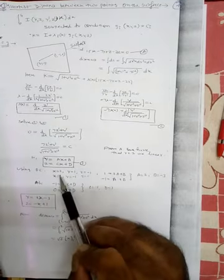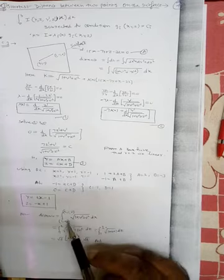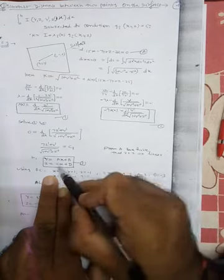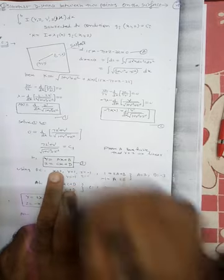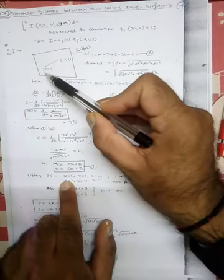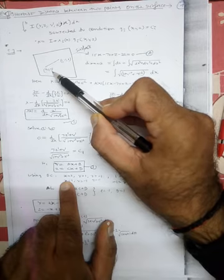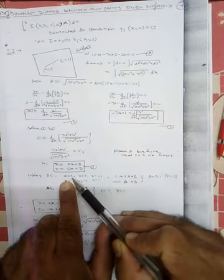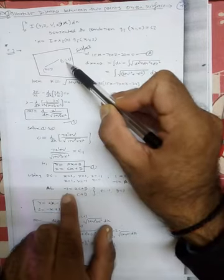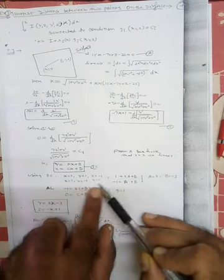From x = 2, y = 1: 1 = 2A + B. From x = 1, y = −1: −1 = A + B. Solving: A = 2, B = −3. For z: from x = 2, z = −1: −1 = 2C + D. From x = 1, z = 0: 0 = C + D. Solving: C = −1, D = 1.